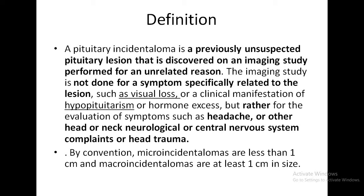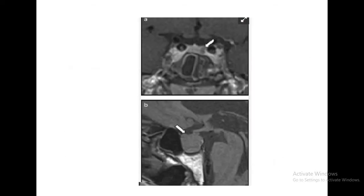Micro incidentalomas are less than one centimeter and macro incidentalomas are more than one centimeter. These are images of incidentalomas — as shown by the arrows, you can see they were captured on the MRI.